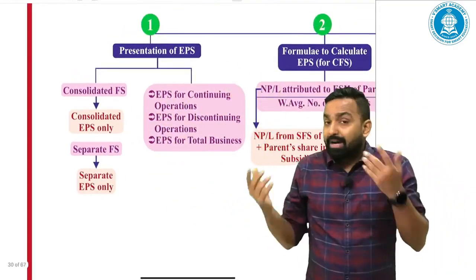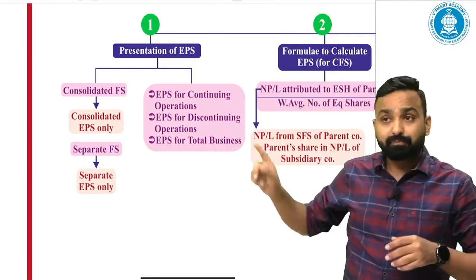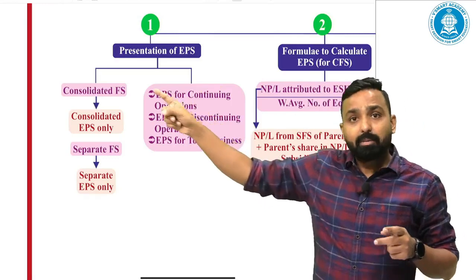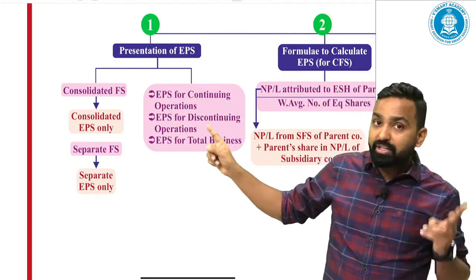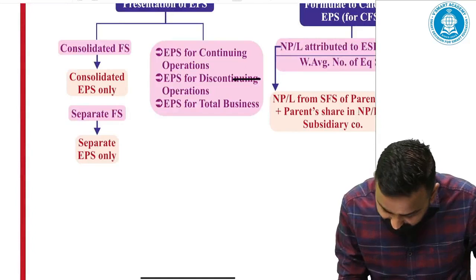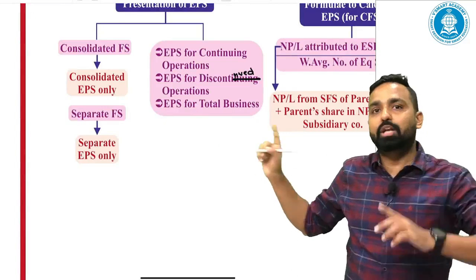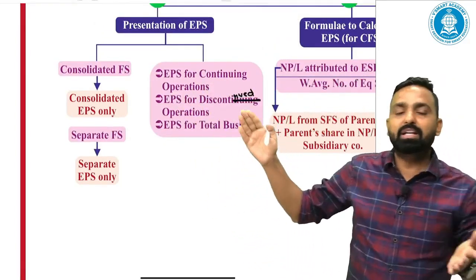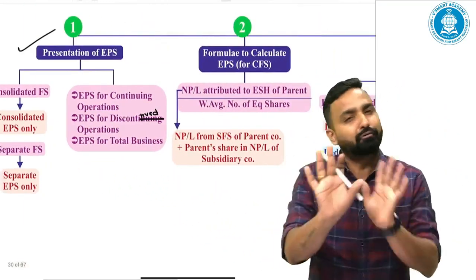As far as presentation purpose is concerned in the profit and loss schedule - Schedule 3 profit and loss format - we need to show basic as well as diluted earnings per share in three categories: EPS for continuing operations, EPS for discontinued operations, and EPS for total business. This presentation point is not very relevant for your exams.